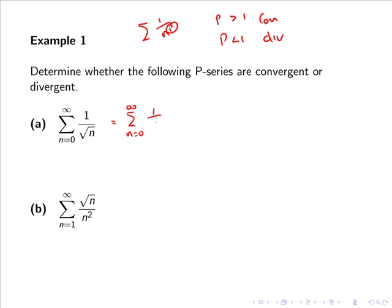So the sum can be rewritten as 0 to infinity of 1 over n to the power of a half. In this case p equals a half, which is less than 1, and so the series diverges.